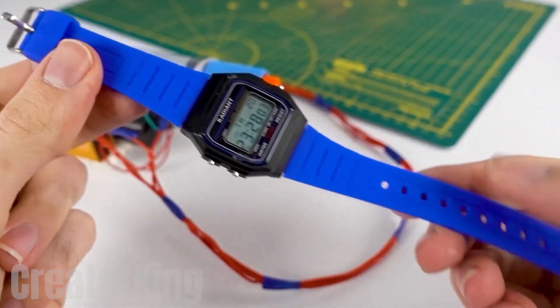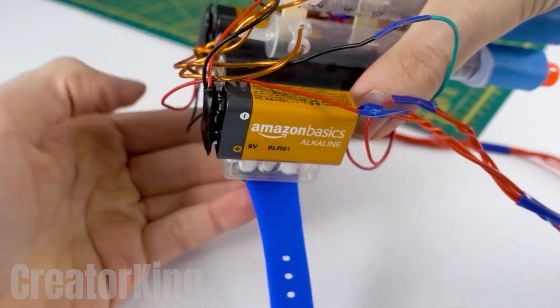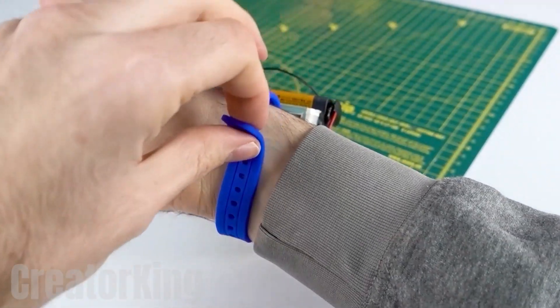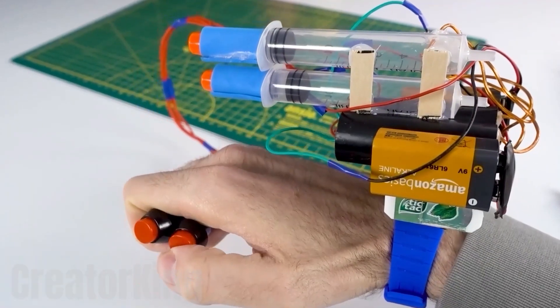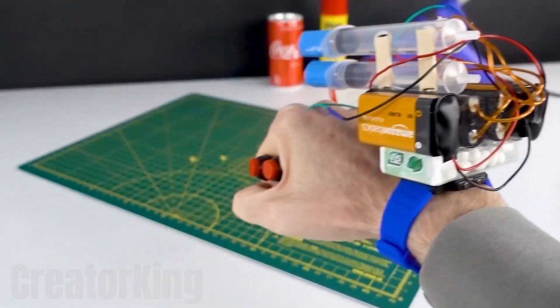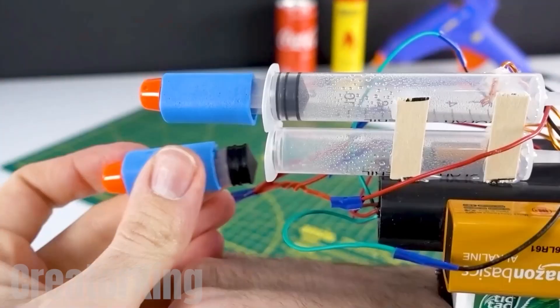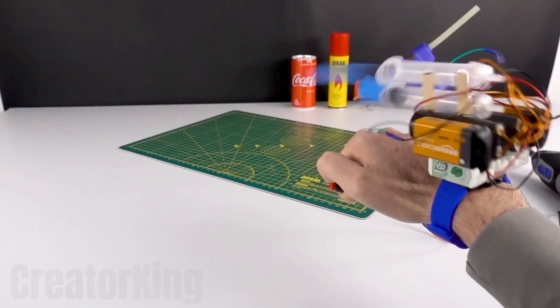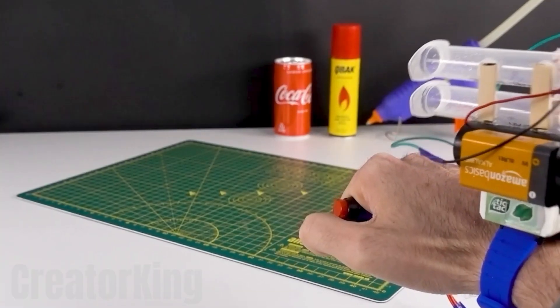Remember this watch I told you about a few minutes ago? We're going to add an extra function so that now, apart from telling the time, it will defend you with the tic-tac darts. Now we have a watch with a darts defense system to protect us in any dangerous situation. By simply loading it with a special reactive liquid, we'll be able to defend ourselves in true James Bond style. I doubt that any of your friends have anything as cool as this.